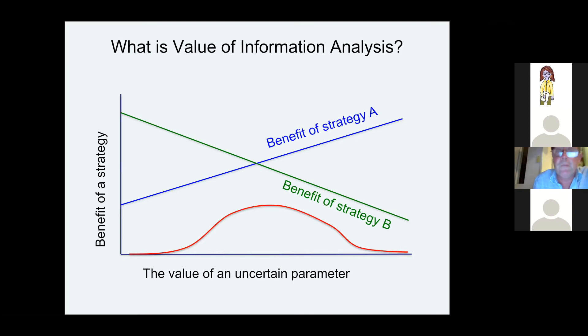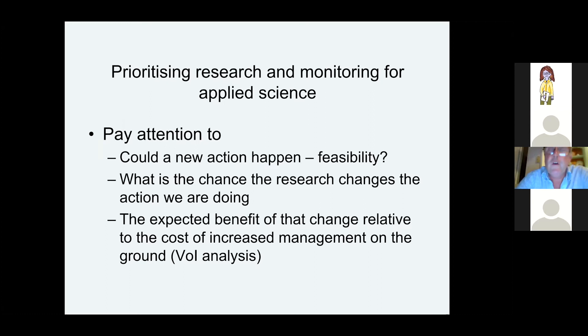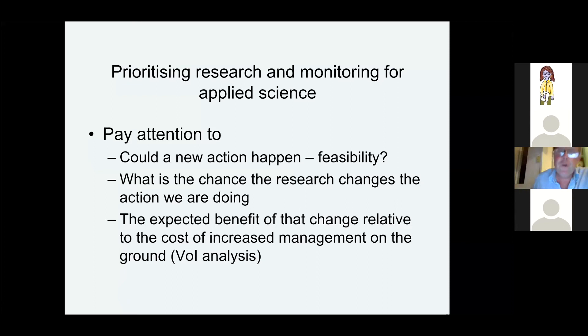So this is really the bottom line: when you're doing monitoring research for applied conservation, is the research going to lead to a new action? What is the chance that the research actually changes what you're doing and makes it significantly better? And the really hard test that nobody wants to talk about is: is the benefit of that changed action much greater than just doing more management? We could just keep doing Strategy A and because we're spending more money on it — not on science or research — maybe we're just going to get a better outcome.